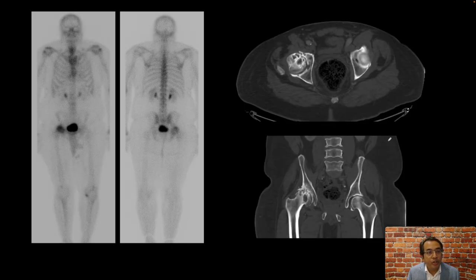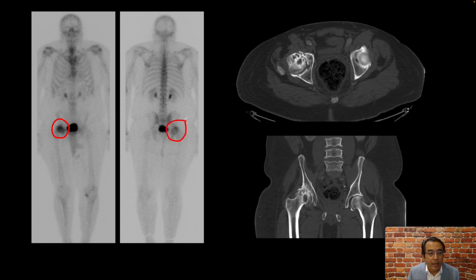Here is our first patient. On the left, we have anterior and posterior whole body images from the bone scan, and on these images, we find that there is a focus of increased uptake in the right hip, seen here on the anterior image and also on the posterior image.